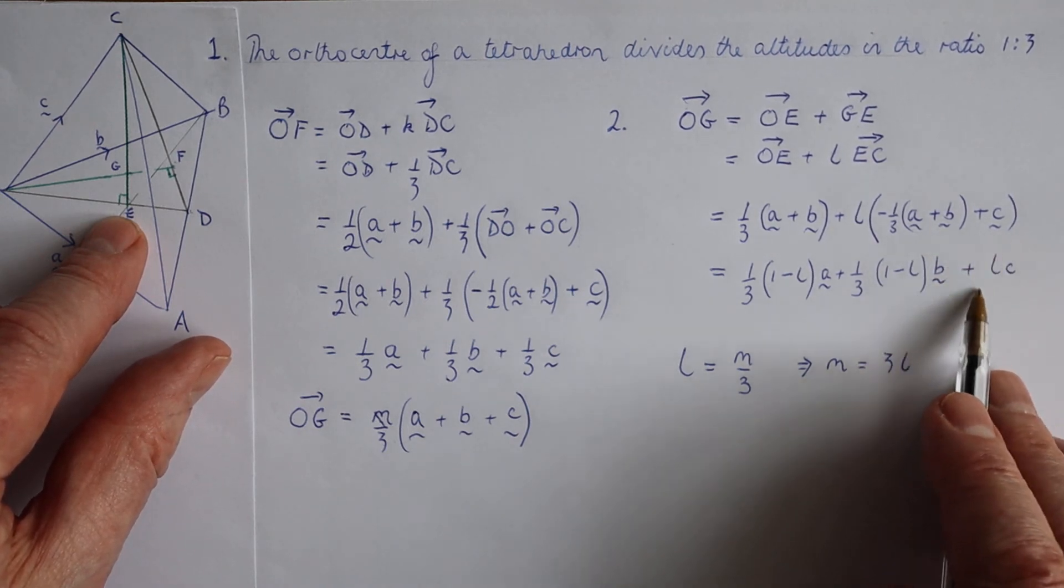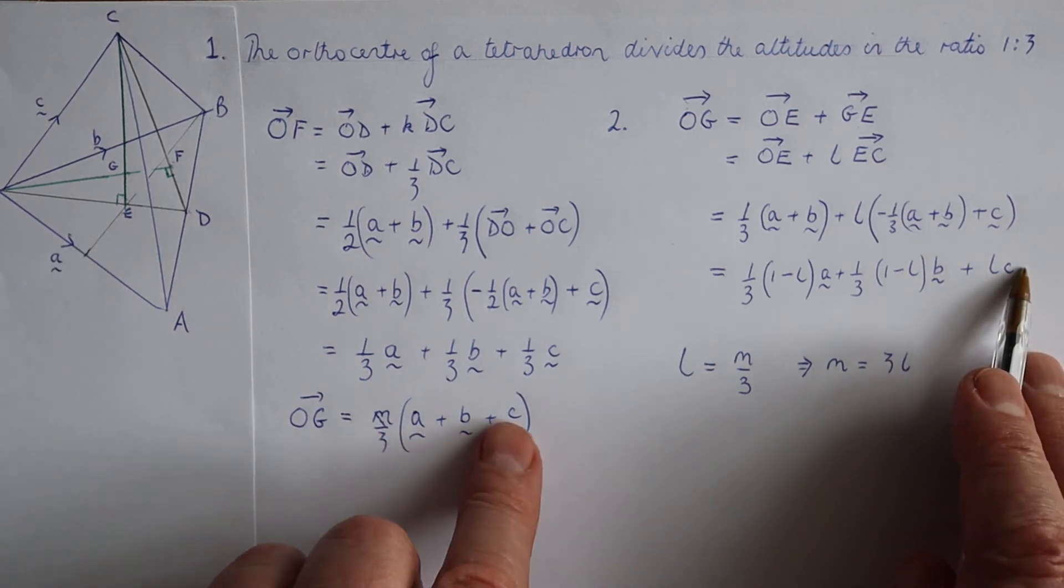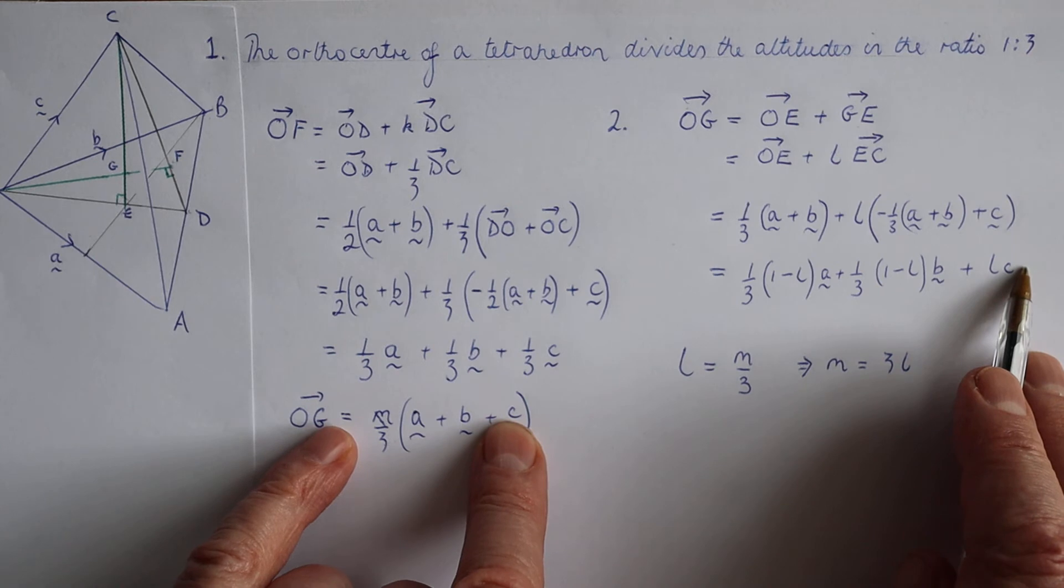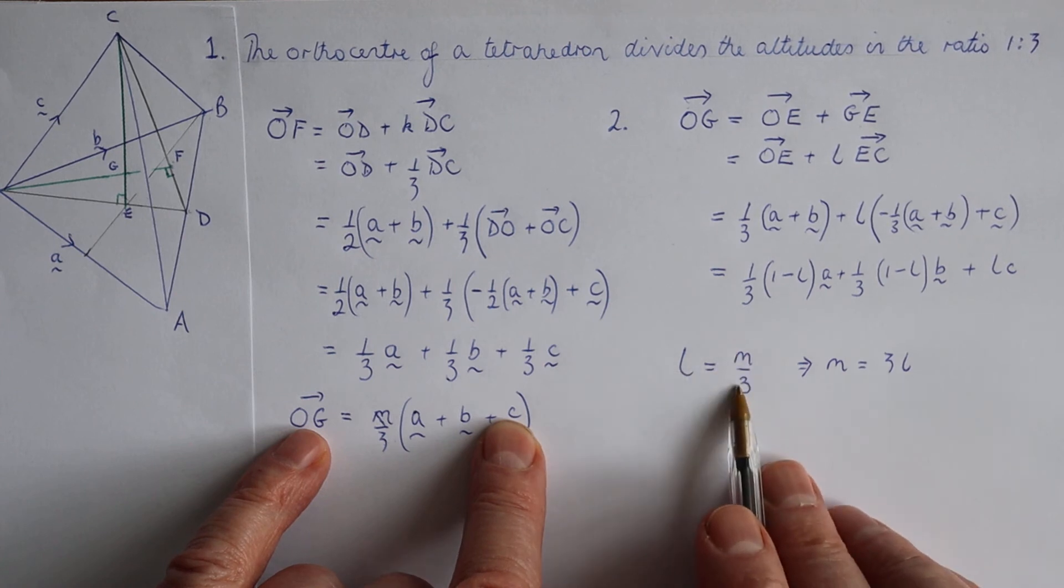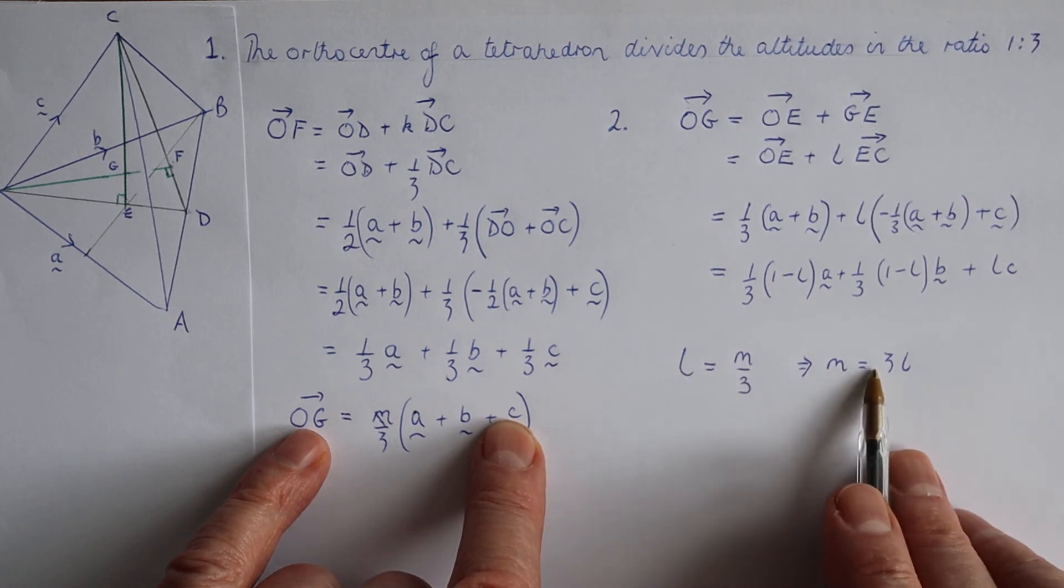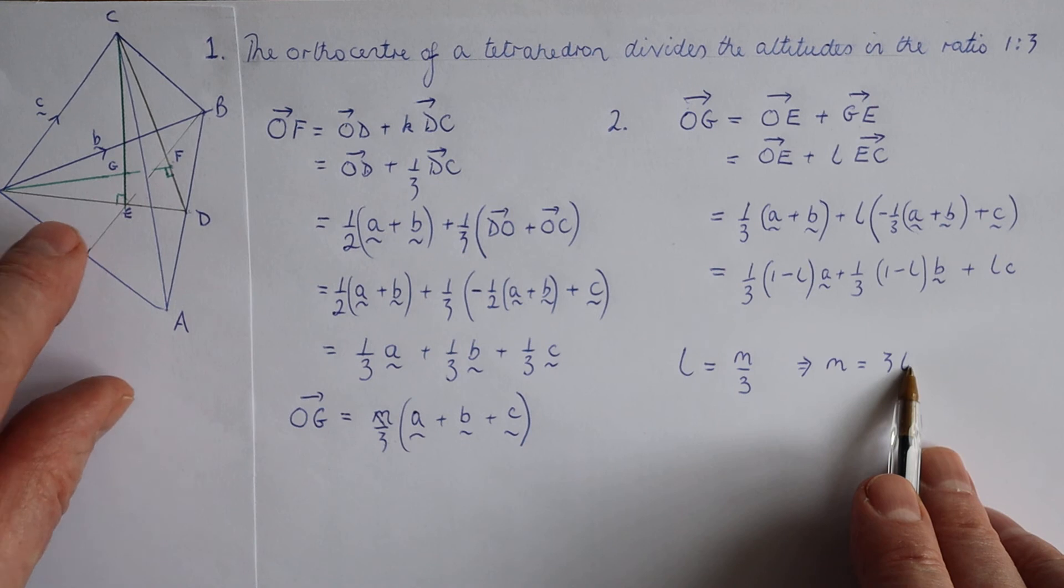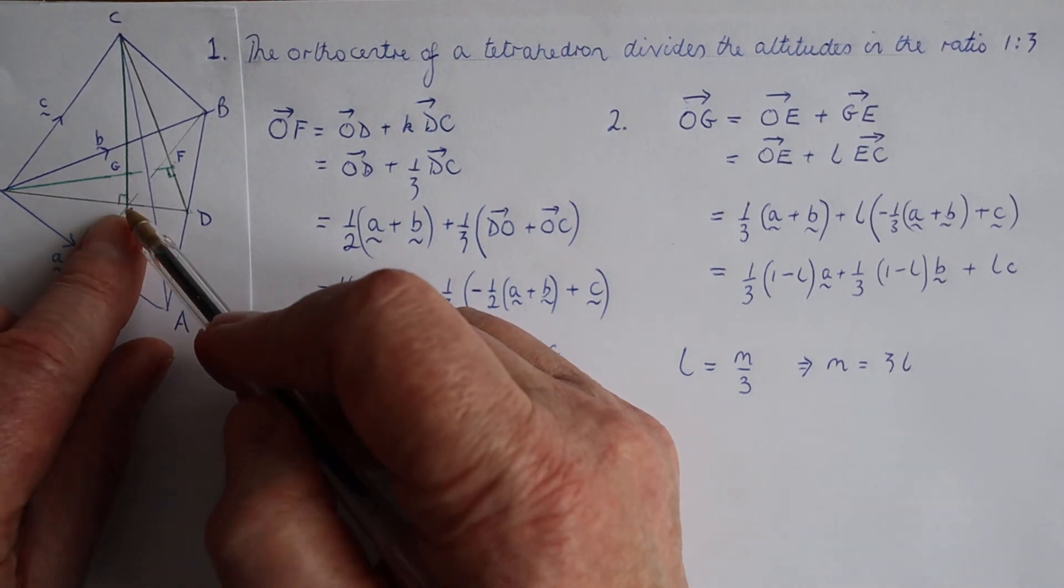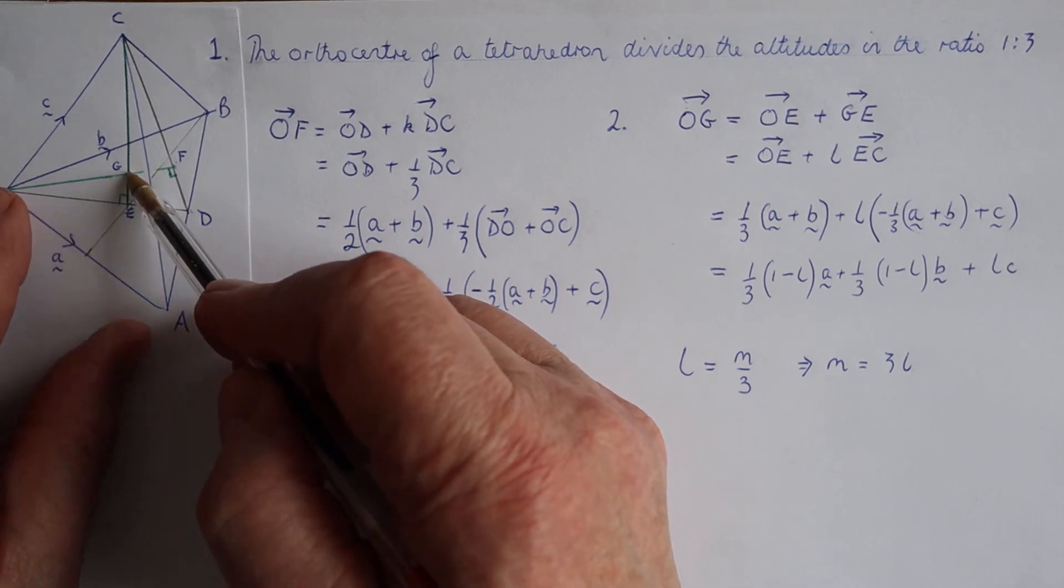Now we can compare coefficients, because we have M over 3 C from this way of getting from O to G, and LC from the other. So L is equal to M over 3, and M is 3 times the length of L. Now that, in fact, tells us exactly what we need, because we're being told that this length multiplied by 3 will give me that length.